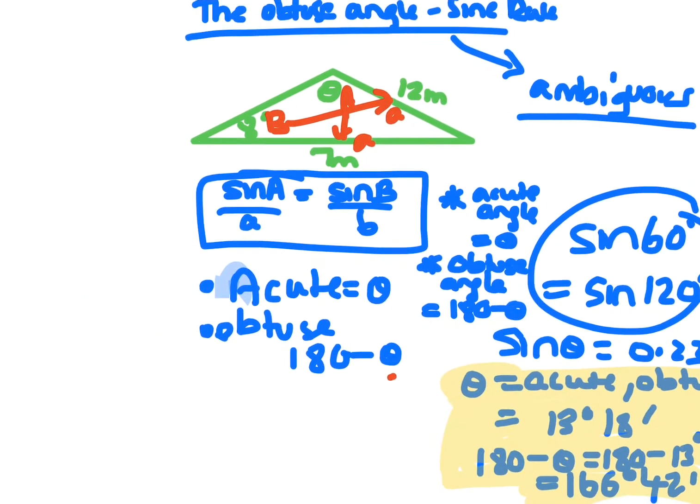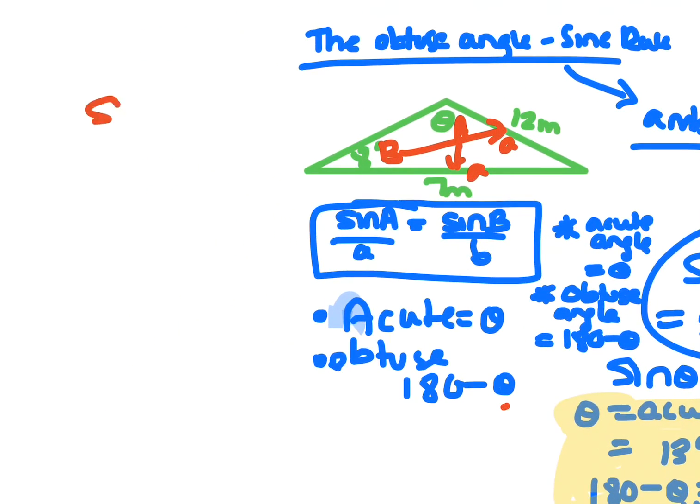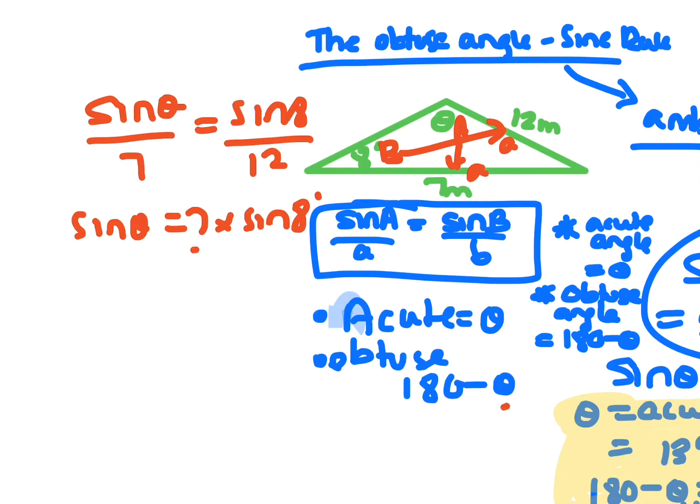When we're doing that question, we go sine theta over 7 equals sine 8 over 12. So sine theta equals 7 times sine 8 degrees over 12. Get what that angle is, do shift sine minus 1 of whatever that is.